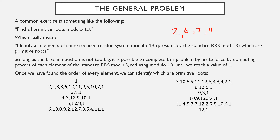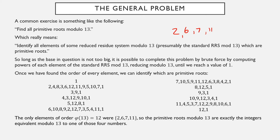I'm glossing over this because it's a lot of computation — it is technically feasible. What we found was that the only elements whose order was 12 were 2, 6, 7, and 11. So the primitive roots mod 13 are any integer equivalent to 2, 6, 7, or 11 modulo 13.